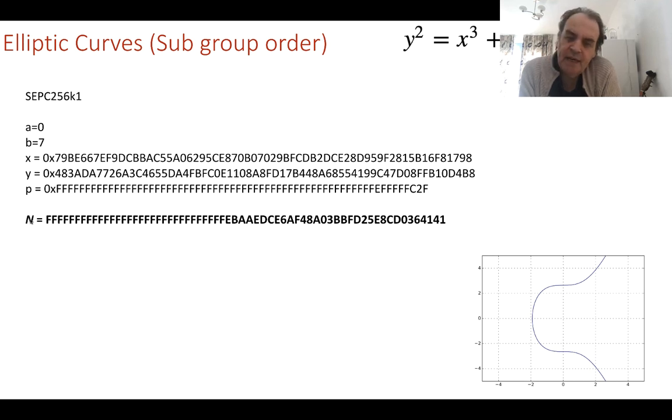So that defines the number of points that we can actually have within our prime number field, within our finite field. And this, the G value, the x and the y, will be selected to maximize the value here so that we can have a very large space.